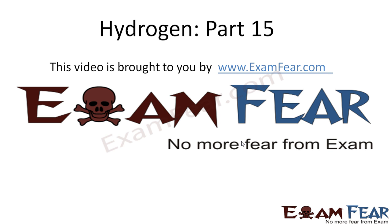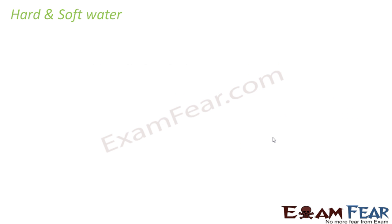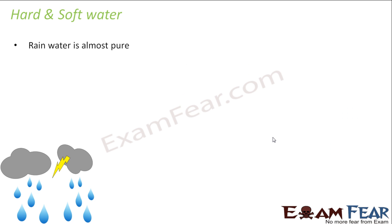Hello friends, this video on hydrogen part 50 is brought to you by exampeer.com — no more fear from exam. So we have two kinds of water: hard water and soft water. You must have learned this in class 10, but we will go a little more in depth. Distilled water is the most pure form of water, and rain water is almost equal to distilled water — it is almost pure.